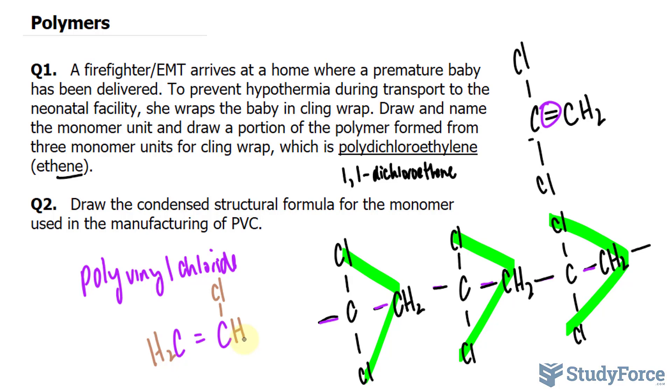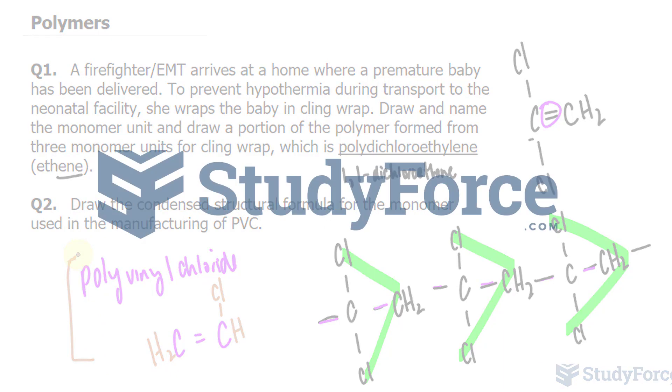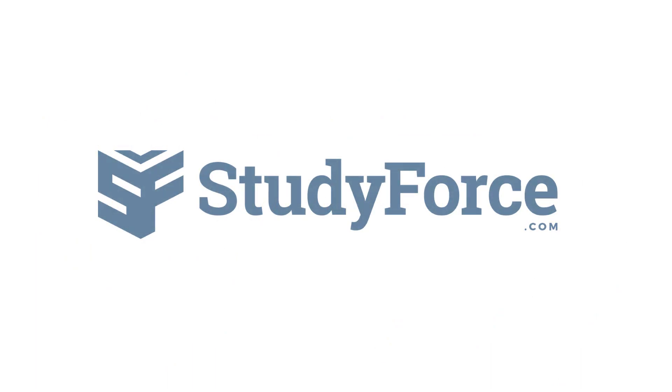That's all they're asking us for, and they're not asking us for the polymer. So this represents the answer to question number two. And there you have it. Two examples on how to draw and name monomers and polymers. Thank you.